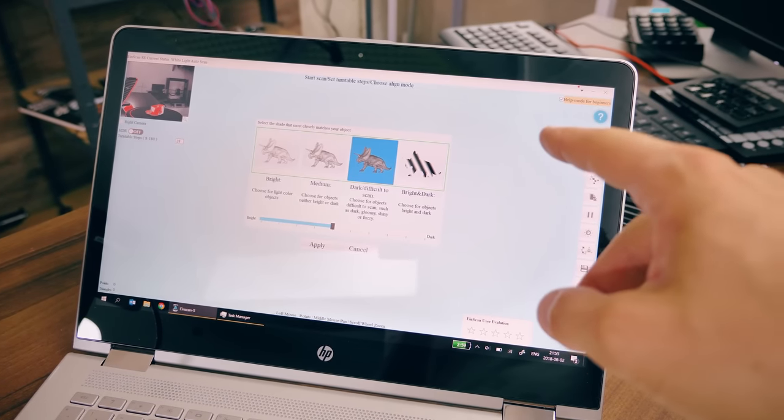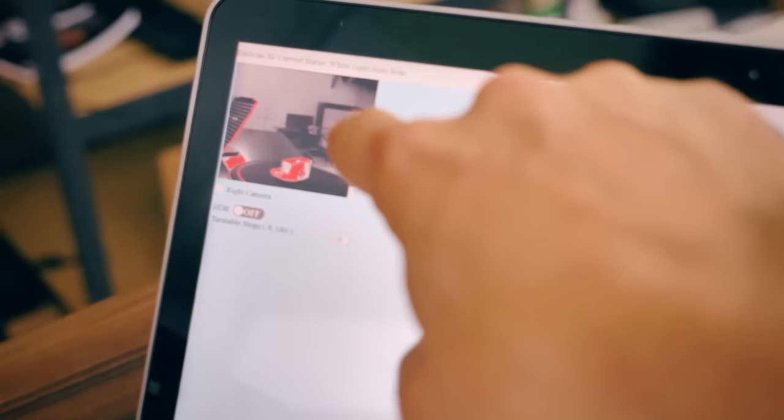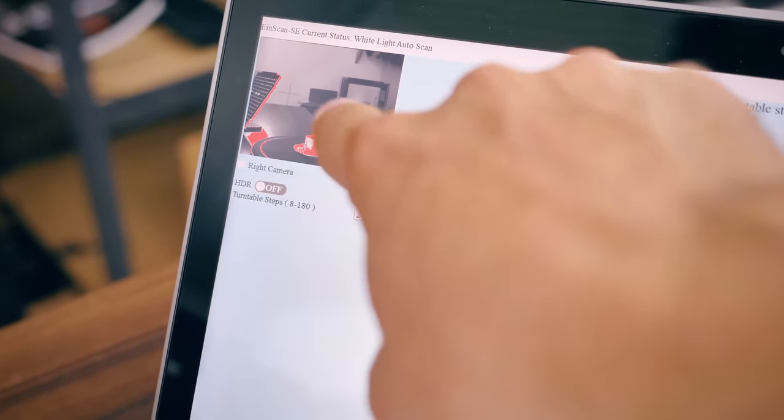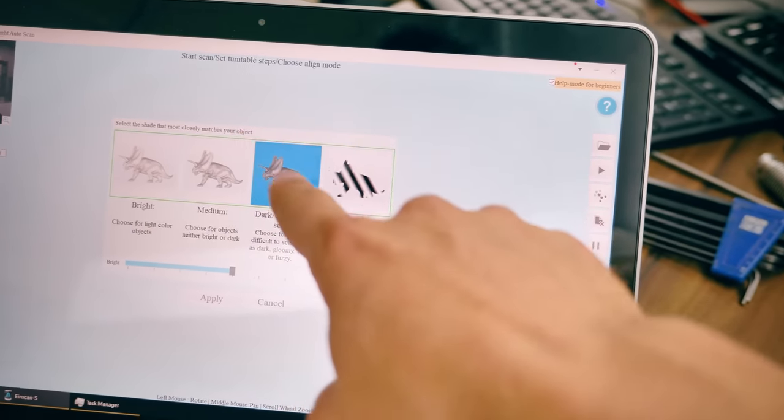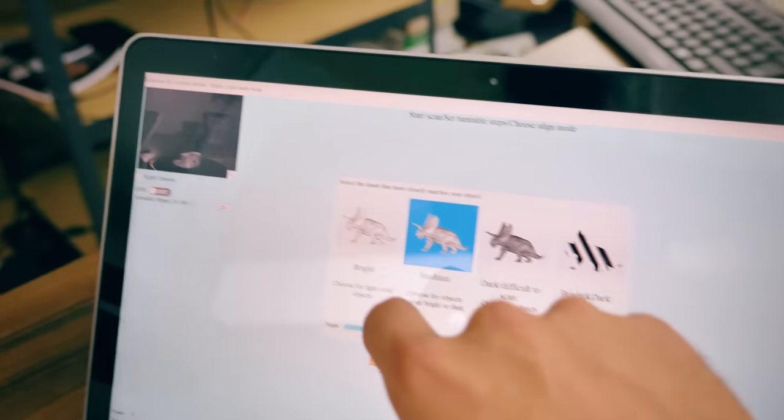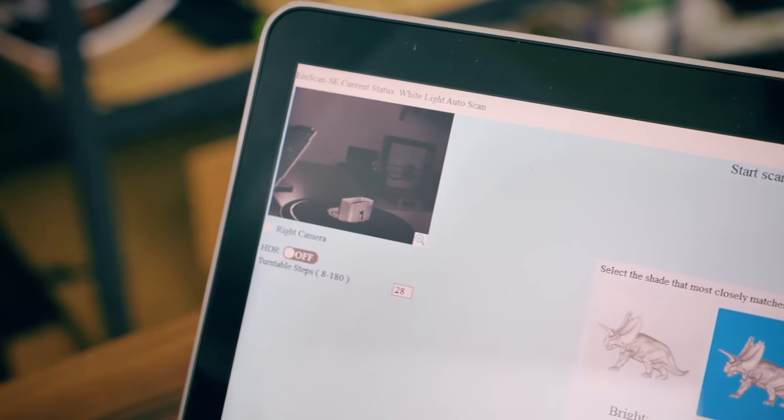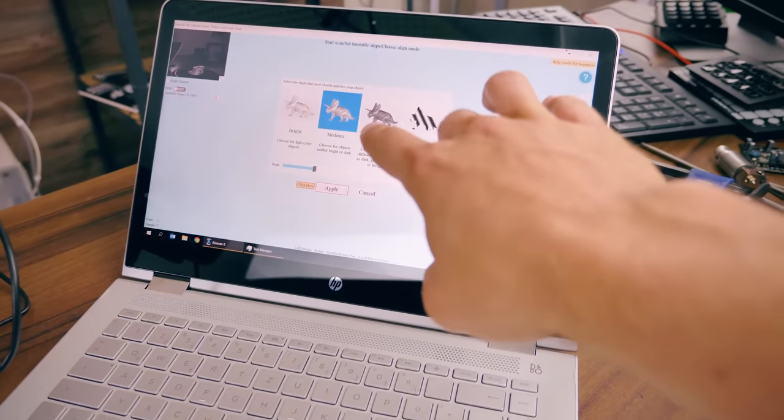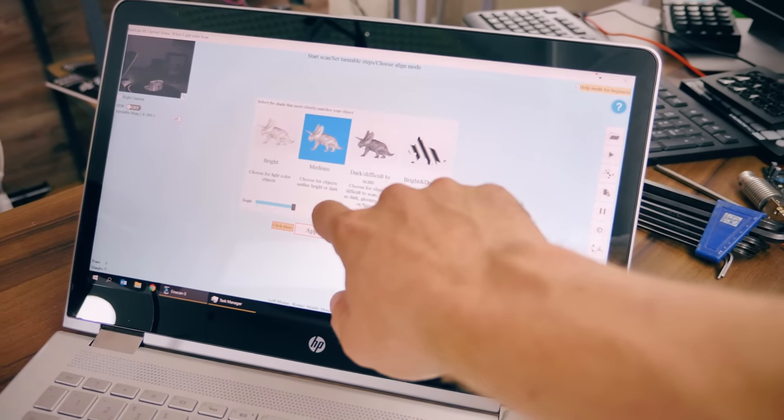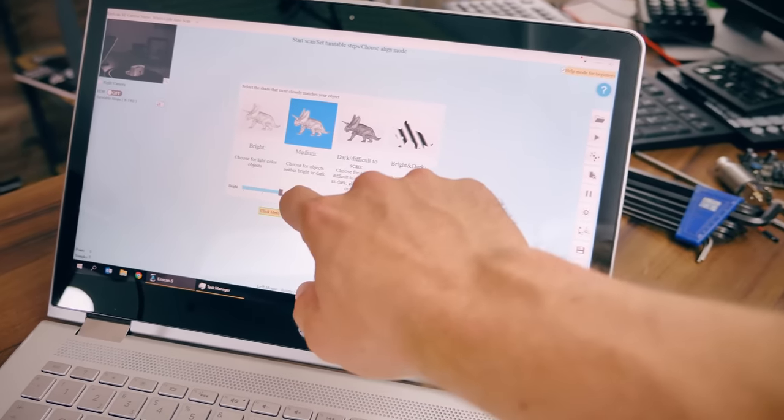So I opened up the Unscan software again, and you can already see right up here where all this red is. Everything that's red is overexposed, so that is too bright, so the dark difficult to scan setting is not okay anymore. Let's go with medium, and you can see that's a lot better.